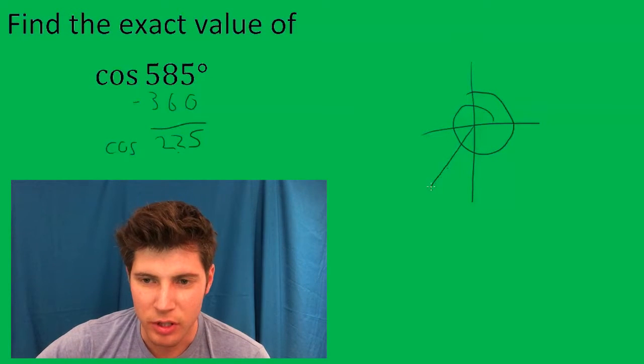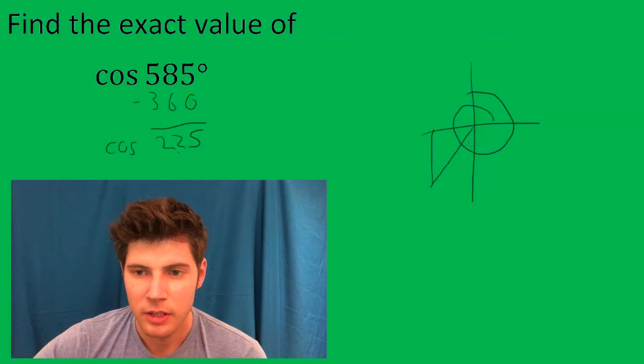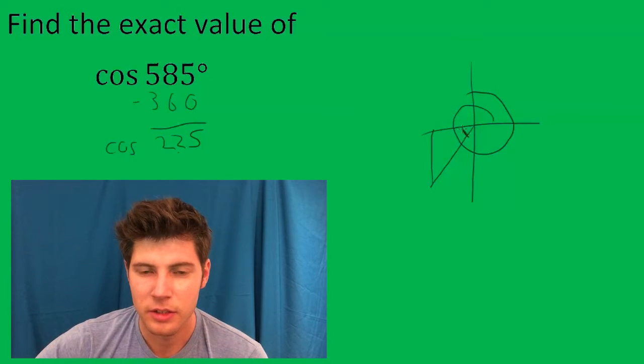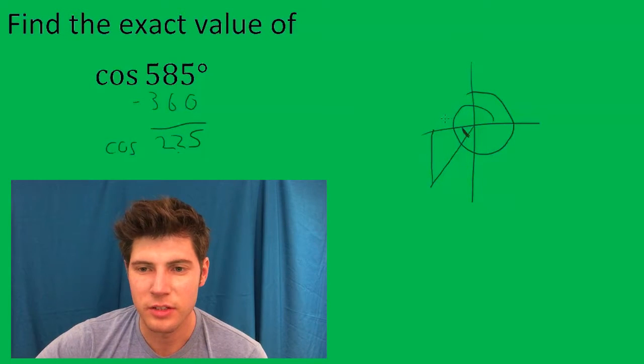So now if we're going to draw the triangle from here, so this is our theta. So the cosine is going to be adjacent over hypotenuse.